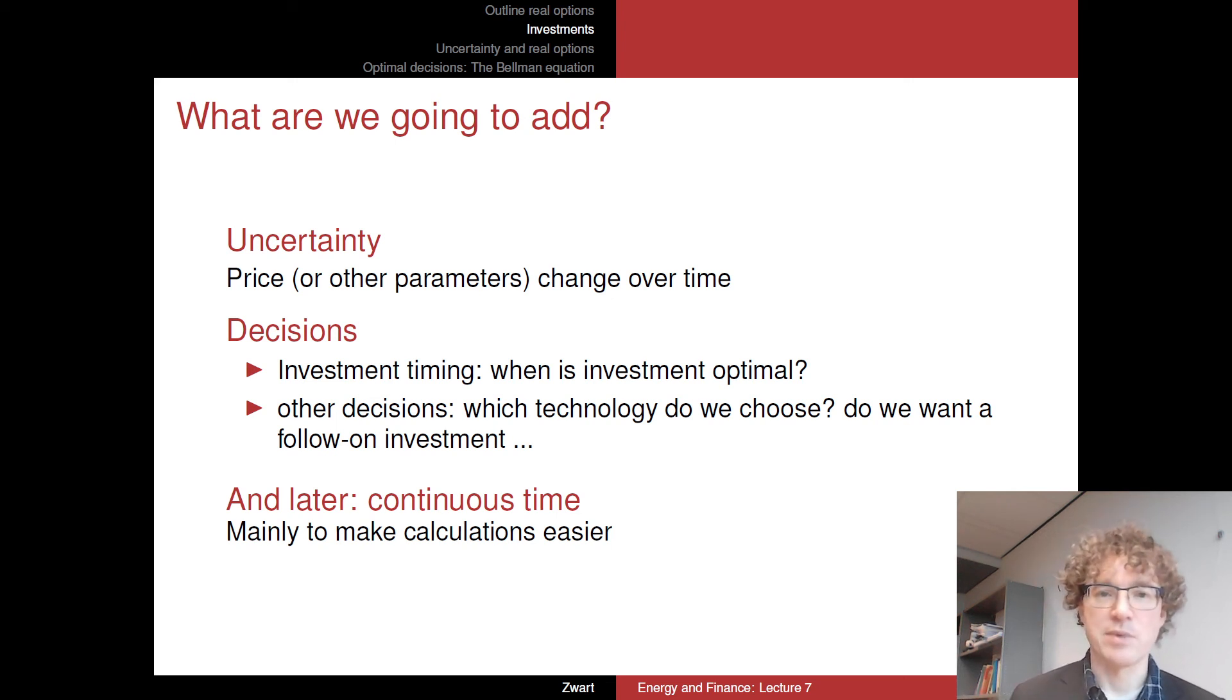So we want to add something to this model. And the things that we are going to add, of course, are uncertainty. So price is not constant. Price or costs or whatever you wish, they will change over time. And that might actually change some of the conclusions that we've just drawn. We are also going to add sort of more interesting decisions, just apart from making investment today or not making the investment today. And that's about timing the investment. We are going to ask, when is this investment optimal? And that's going to be a more interesting question when prices are moving over time, than when prices are constant.